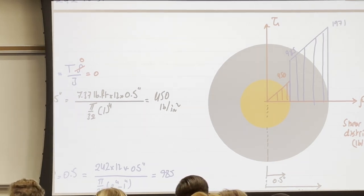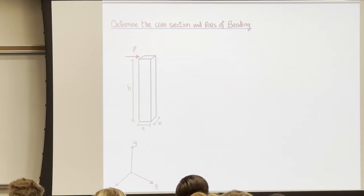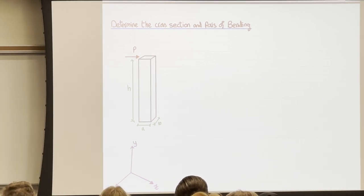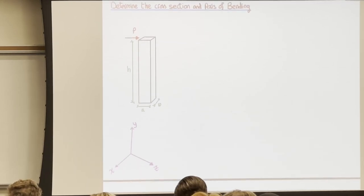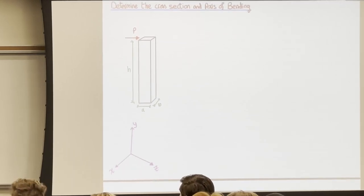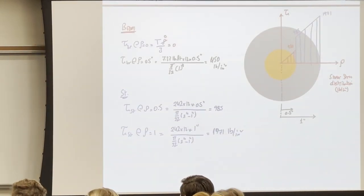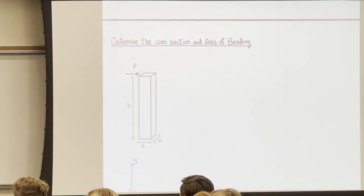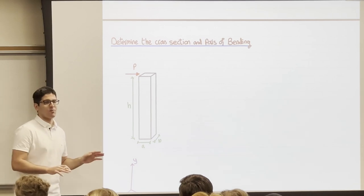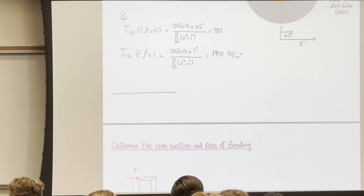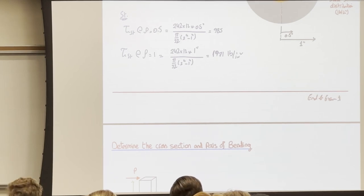That concludes the torsion topic — this is also the end of Exam 1 material. Next we move to axis of bending, which will be covered over the next two weeks distributed across lectures, as the full lesson has about 18 slides.